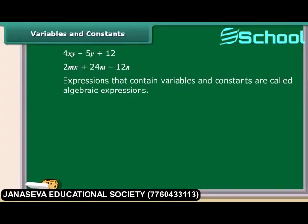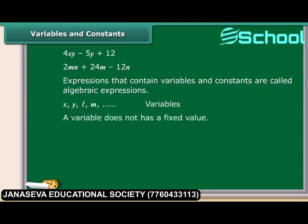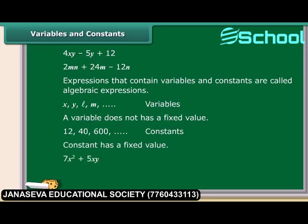Expressions that contain variables and constants are called algebraic expressions. The letters such as X, Y, L, M and so on are used to denote variables. A variable can take various values and its value is not fixed. On the other hand, a value that does not change is a constant. So in an equation 7X squared plus 5XY plus 8, X and Y are the variables and 8 is a constant.